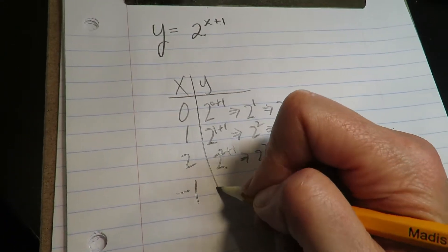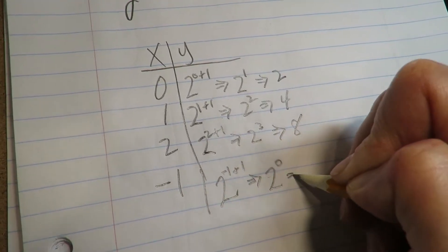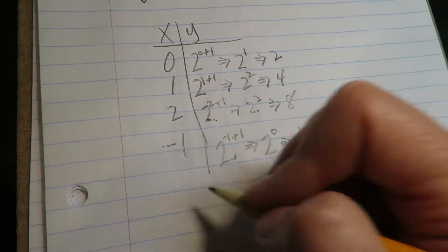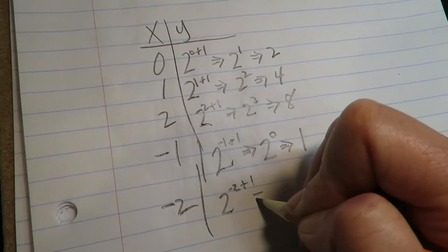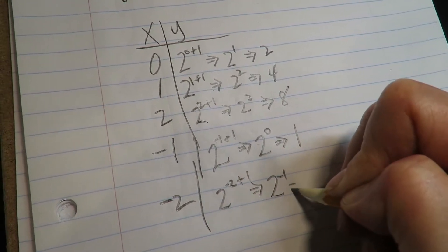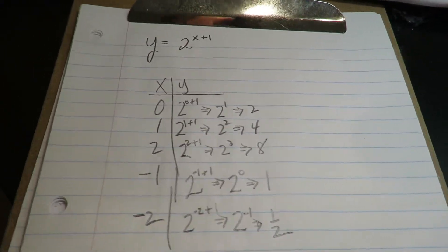If we put in a negative one, it's two to the negative one plus one, which is two to the zero, which is one. Let's put in a negative two also. So it's two to the negative two plus one, which is two to the negative one, which is a half. All right, so I just crunched out some points for you.